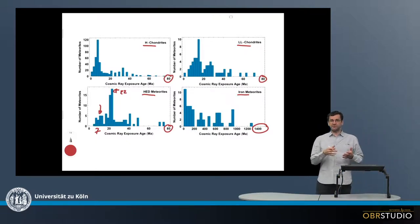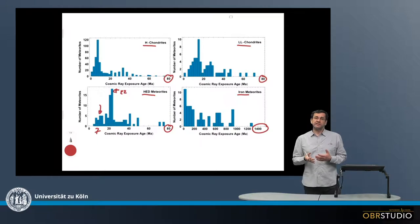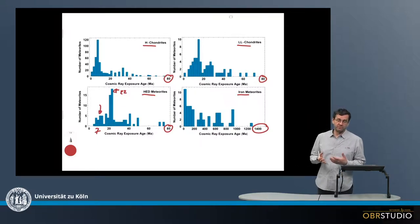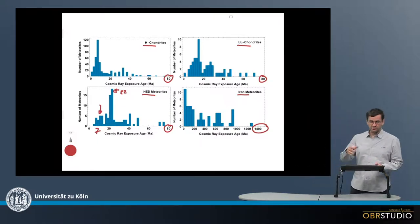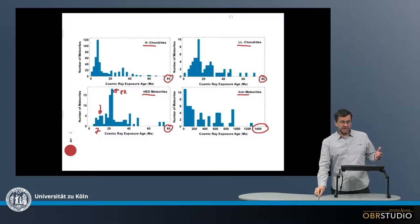Now the HEDs are Howardites, Eucrites and Diogenites, and they are assumed to come all from the asteroid Vesta, based on reflectance spectra. And then when we see here these peaks, the interpretation is that there might have been two major collisions.